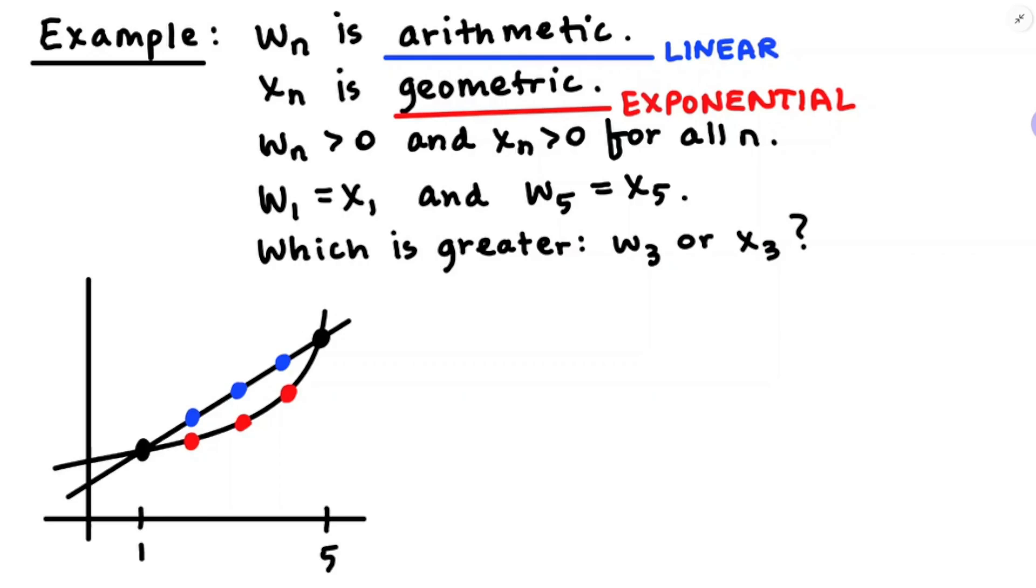And the geometric sequence is going to be on the exponential curve. And I can see w_3 should be halfway between w_1 and w_5. The points on the linear curve are higher. And so that means that w_3 has to be greater than x_3. Now I do know, based on the fact that w_n is greater than zero for all n, that these must both be increasing. And I think I'm just going to leave it at that.